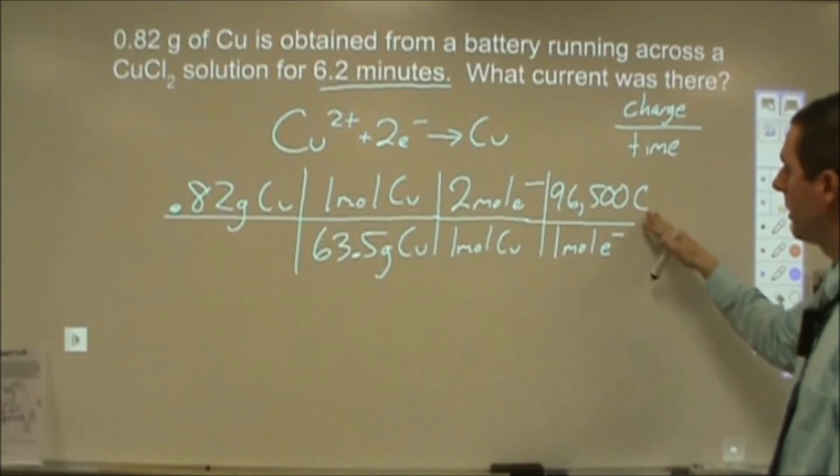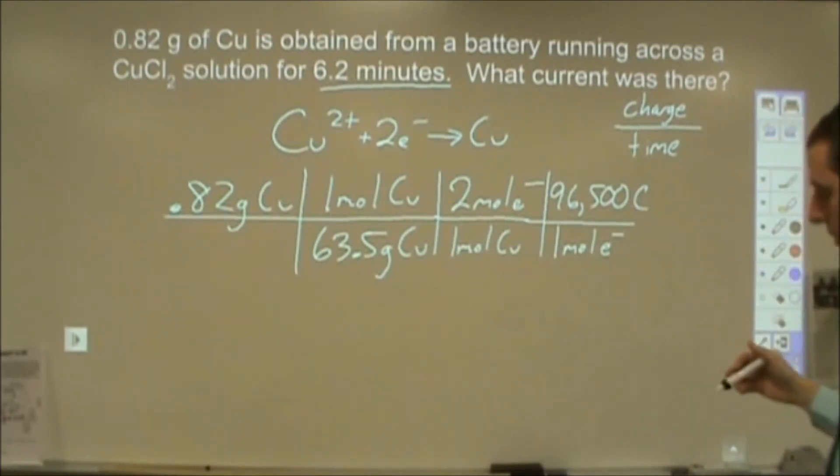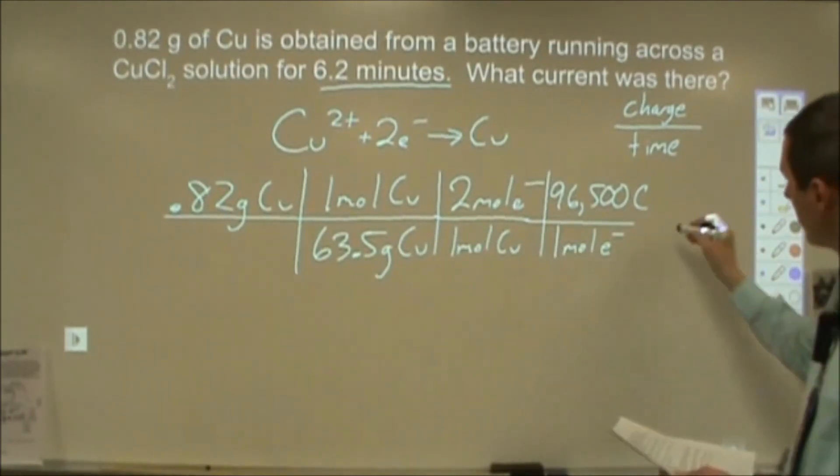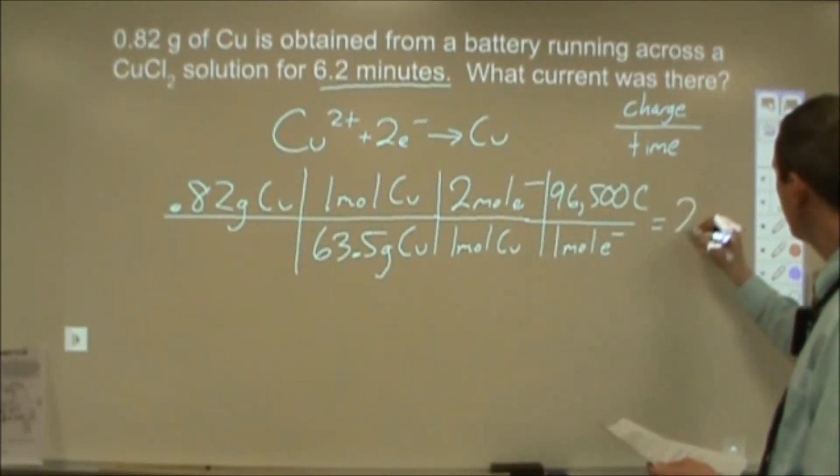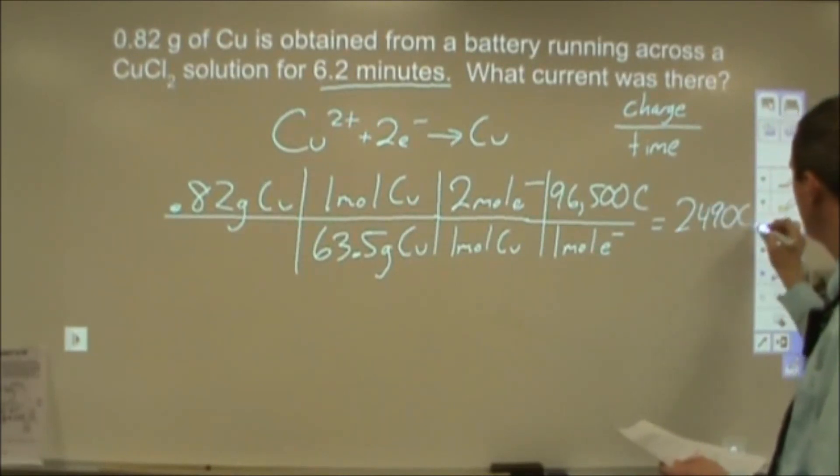Now at that point, we set this up correctly. Now we can plug in what the charge is. And so if we multiply that all out, we get that we have 2,490 coulombs of charge to be able to make that much copper.